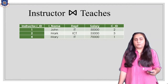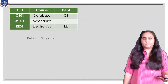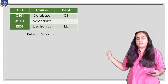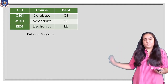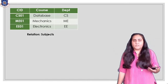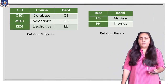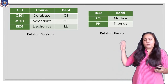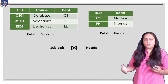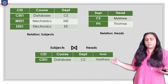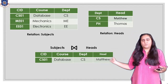The other operator is the outer join operation. I'll use a variation of the tables to show how it can be useful. One table contains subjects with the course ID, subject name, and department; the other is the heads table showing department heads — CS with Matthew and PH with Thomas. If I do subjects natural join heads, I get only one row because only CS matches between the two tables.